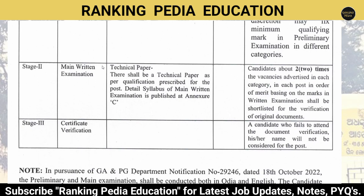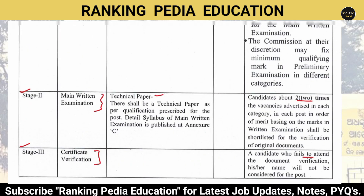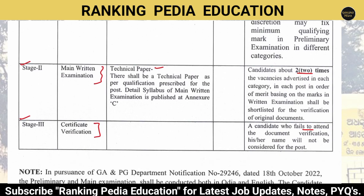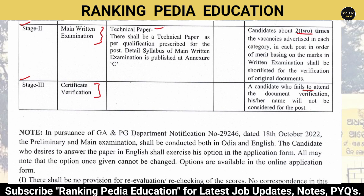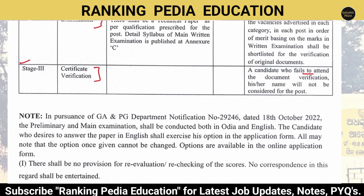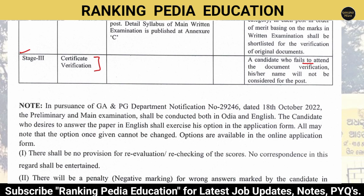Stage two is the Mains Written Examination with a technical paper as per the qualification prescribed for the post. Candidates up to two times the number of vacancies advertised in each category will be called for the mains. Stage three is certificate verification — candidates who fail to attend document verification will not be considered for the post.